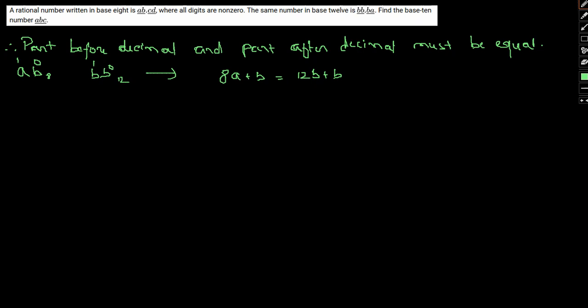And now if we talk about the part after the decimal, we have cd in base 8, again we have ba in base 12. This can be written as c by 8 plus d by 64 will give us b by 12 plus a by 144.